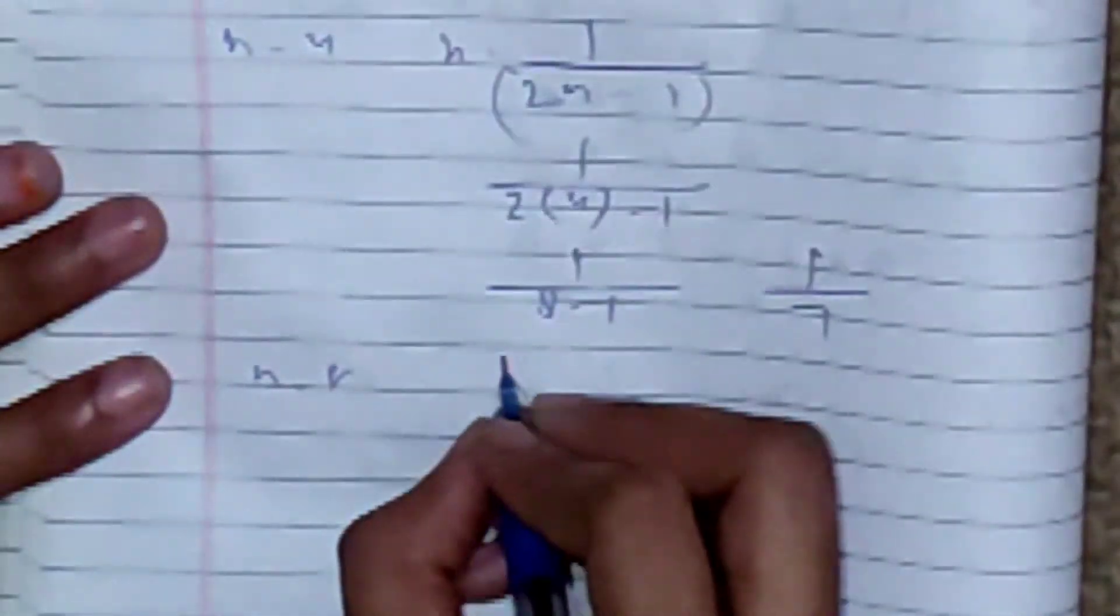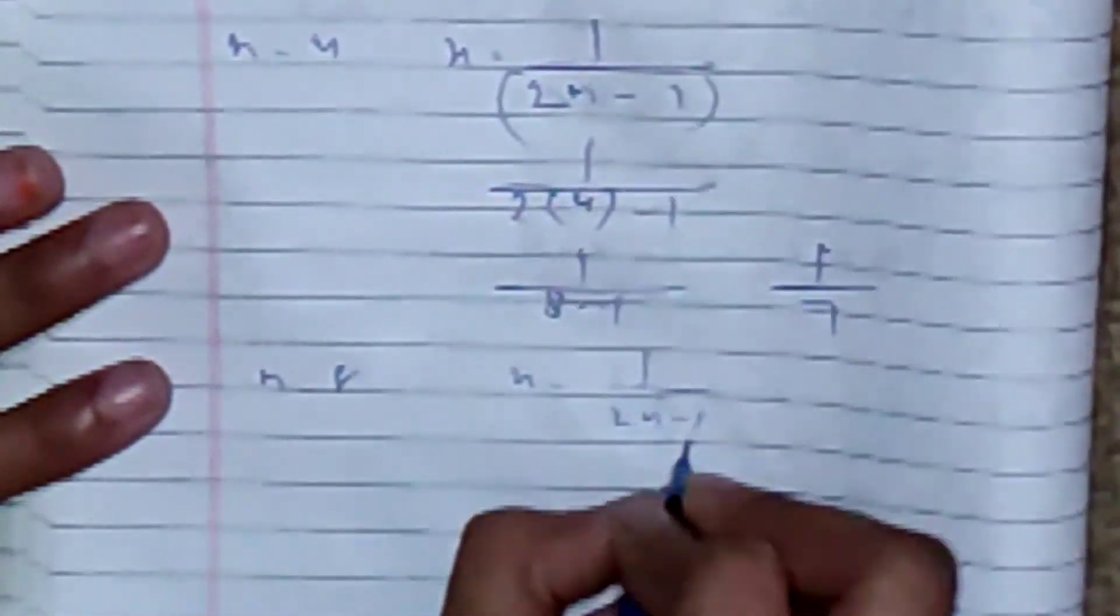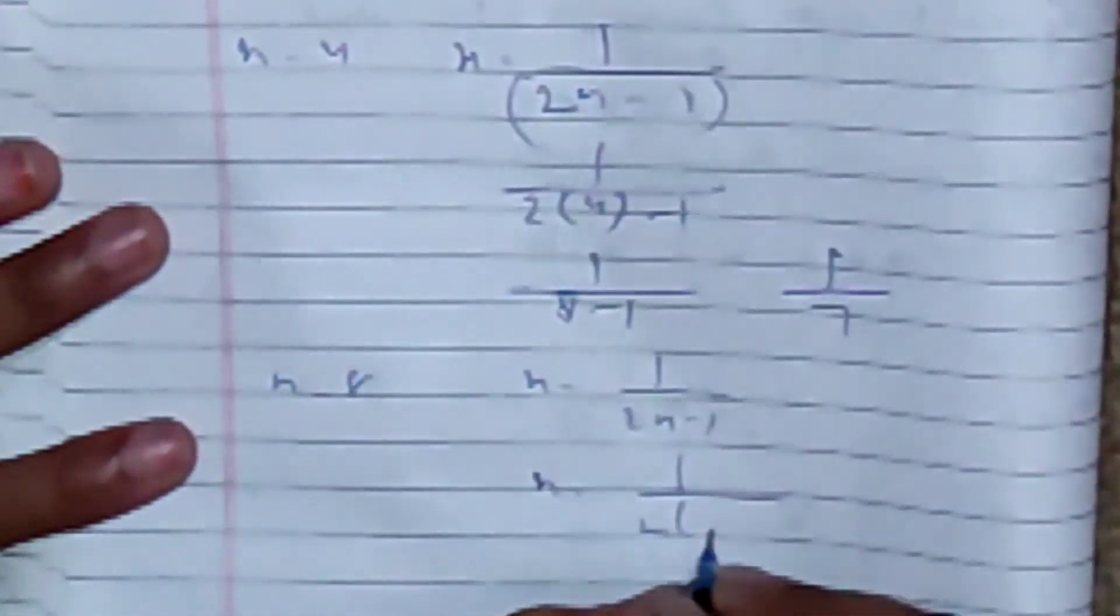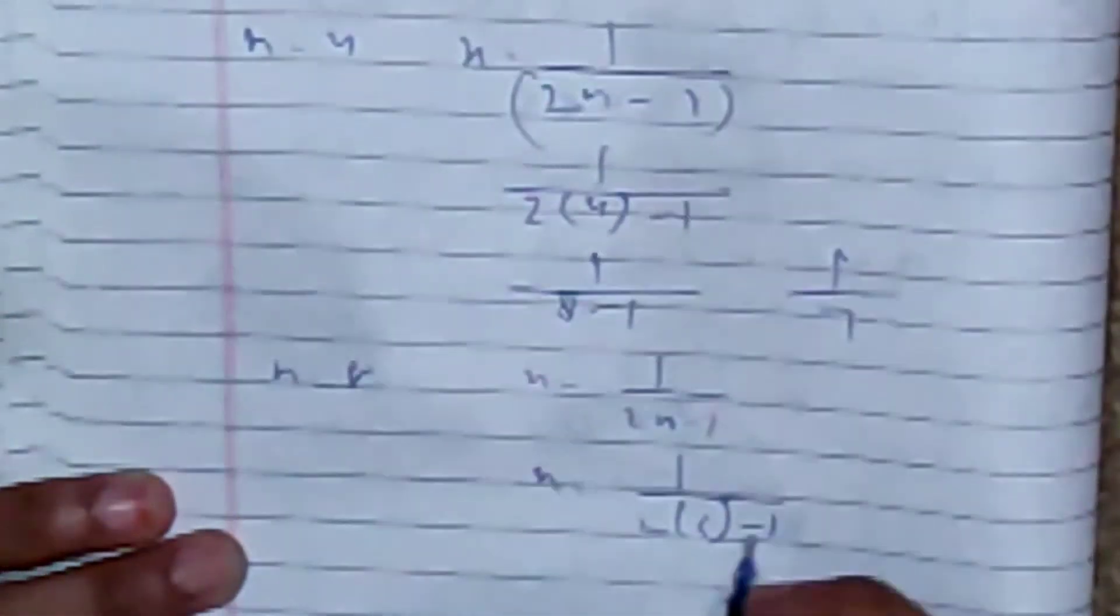N is equal to 5. X is equal to 1 by 2n minus 1. X is equal to 1 by 2 times 5 minus 1: 1 by 10 minus 1, 1 by 9 is our answer.